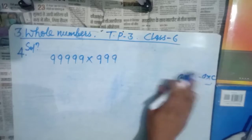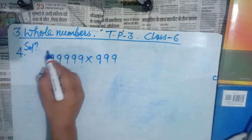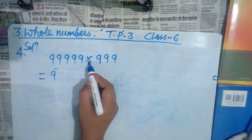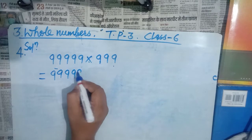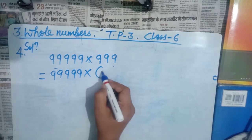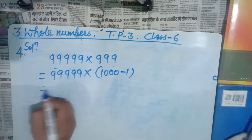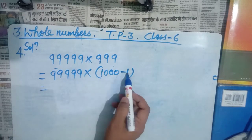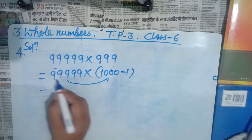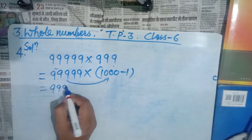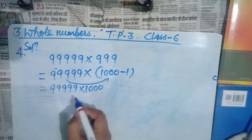Now we have to follow the same rule. First, write the numbers: the greatest five-digit number is 99999, and we multiply it by the greatest three-digit number, which is 999. Now 999 can be written as 1000 − 1, because 1000 − 1 = 999. We follow the distributive law: 99999 × 1000.